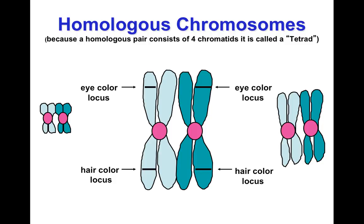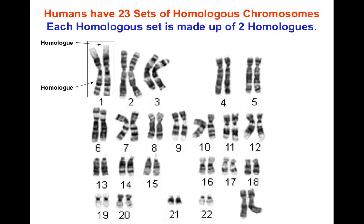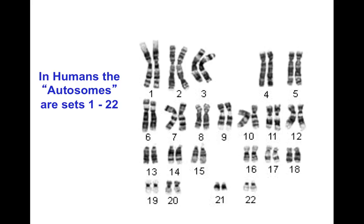22 of our chromosomes we call autosomes — they just make body cells — and then we have the 23rd chromosome, which is our sex chromosome. Here's that tetrad that we will see in meiosis. You can see the locus for eye color — they're coding for the same thing, but they're not identical. This is something called a karyotype. We can take a picture of your chromosomes, line them up, and you can see how we have 22 autosomal, and then the 23rd tells us whether we have a male or female.